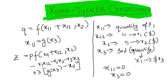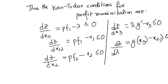Now assuming that both production functions are concave, the Kuhn-Tucker conditions will be specified thus: the Kuhn-Tucker conditions for profit maximization are dz/dx11, dz/dx12, dz/dx2, dz/dx3.